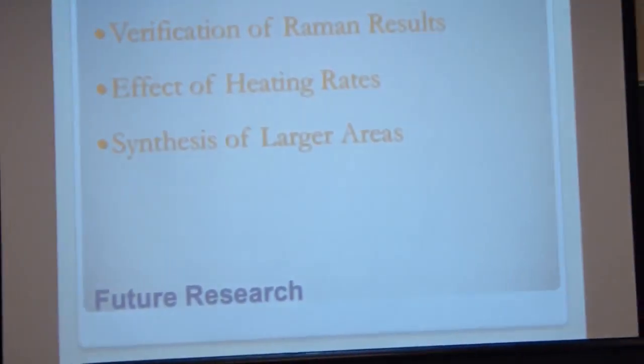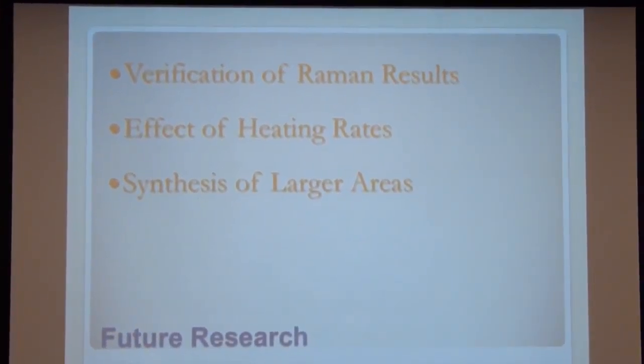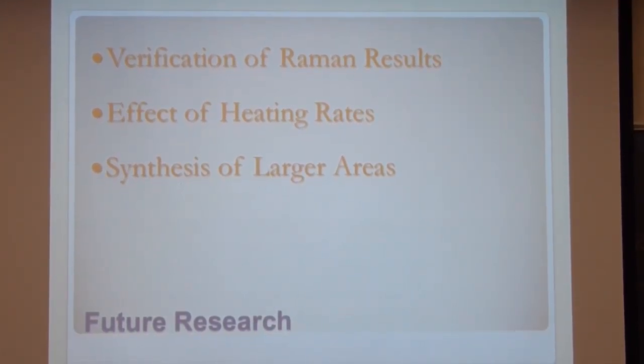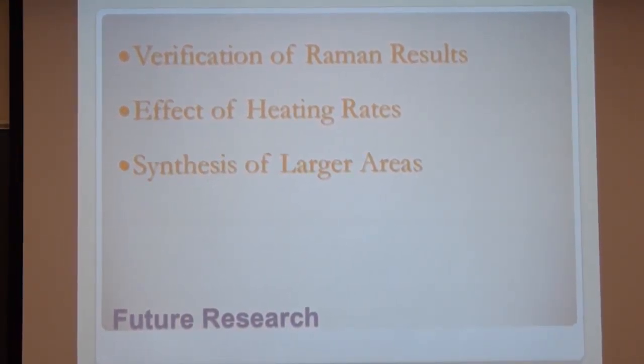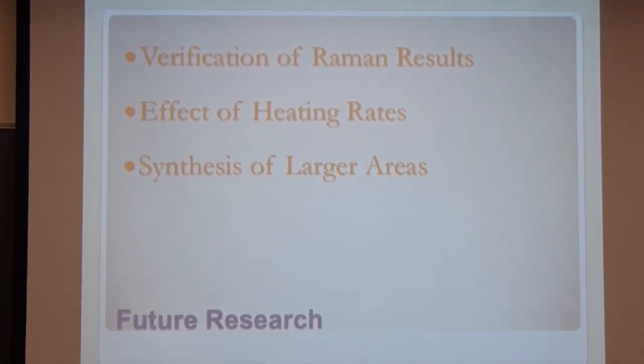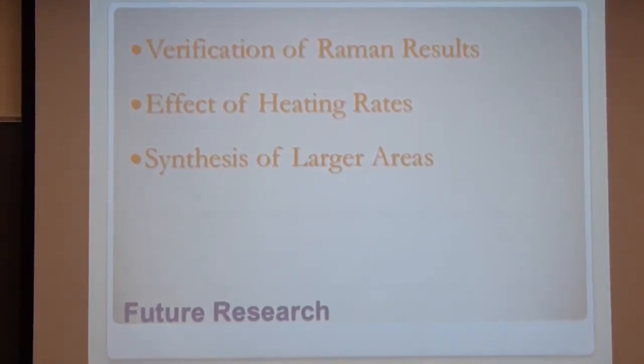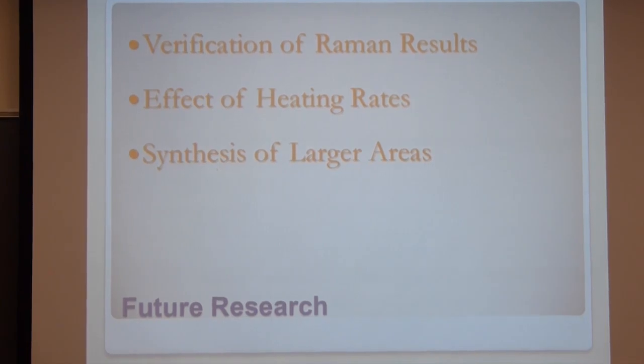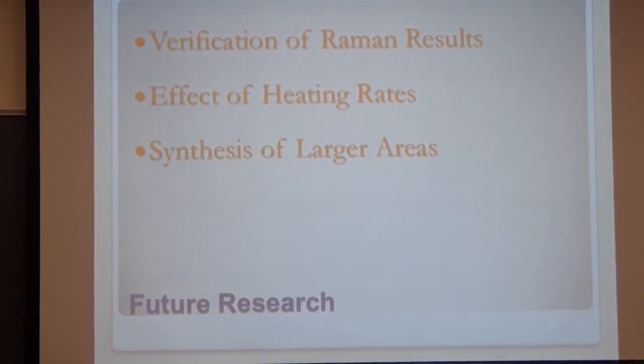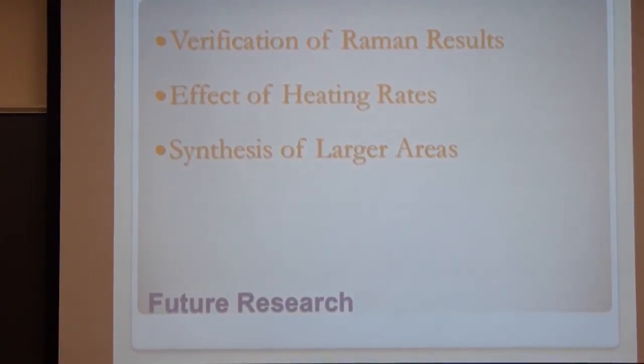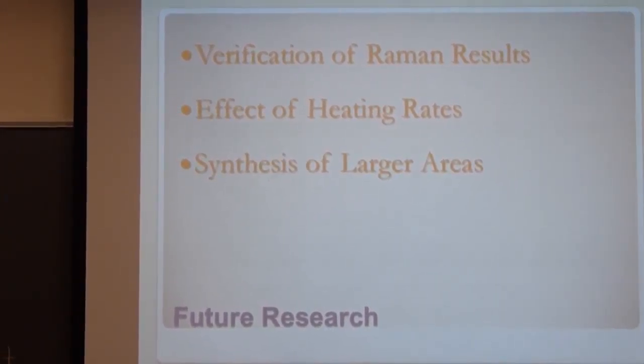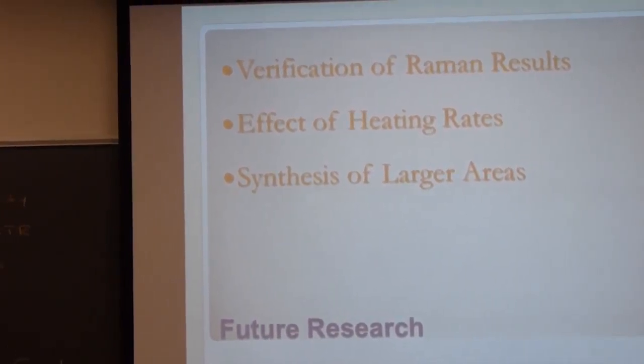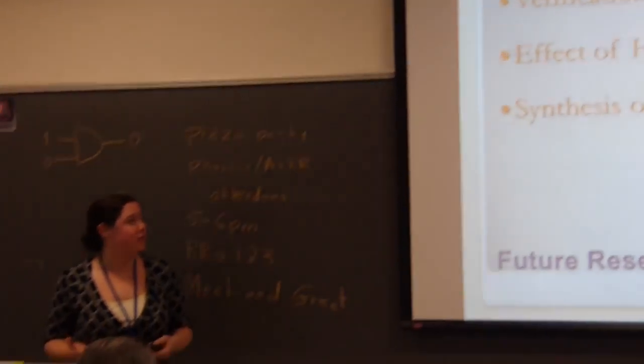So, in the future, what we really need to do is verify our results. Ideally, what we'd like to do is use a tunable Raman laser to be able to negate the effects of the photoluminescence and see if we are actually finding graphene. And if we have, we'd like to see the effects of the heating rates on that. Which, if you guys actually read my abstract, was the point of this. But making graphene is hard, as I have told you. So, it has taken us a bit to get to positive graphene results.